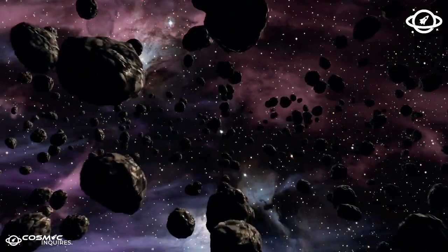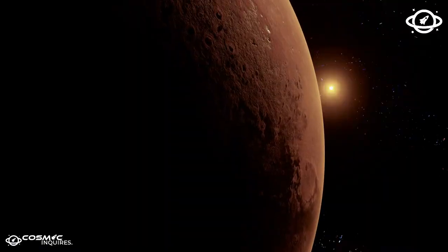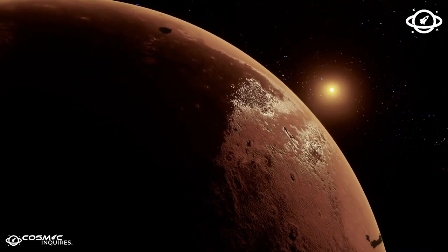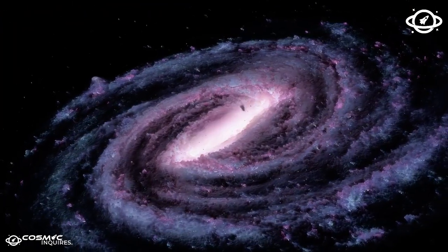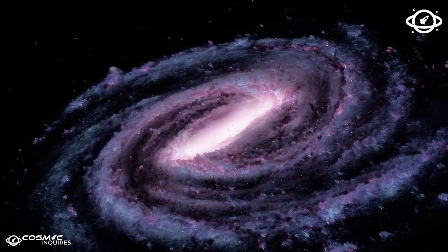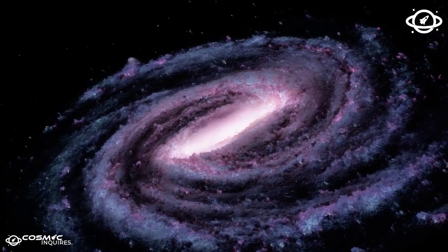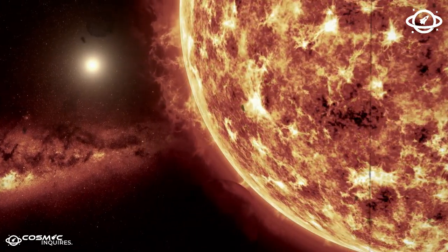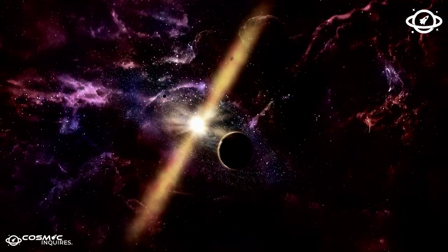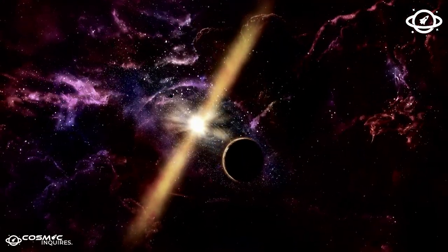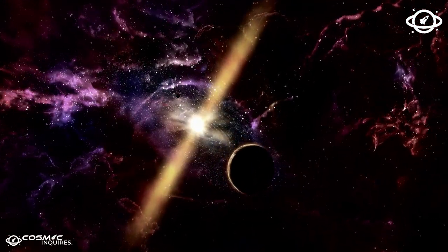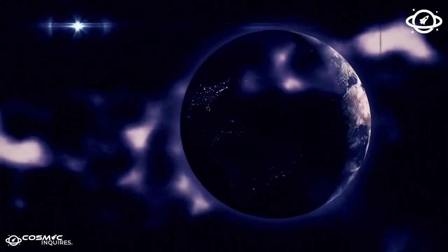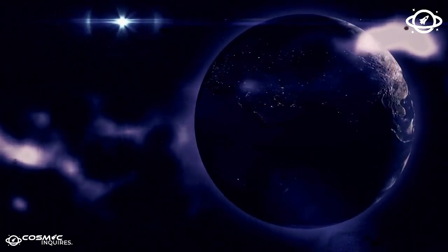In 2011, the US government made a bold move to block China's progress in space. The Wolf Amendment barred NASA from working with China, fearing that collaboration would allow Beijing to exploit American rocket technology. The US didn't want China piggybacking off its advancements, nor did it want to risk China reaching key milestones first. But the ban didn't slow China down, and if anything, it pushed them to accelerate their plans.